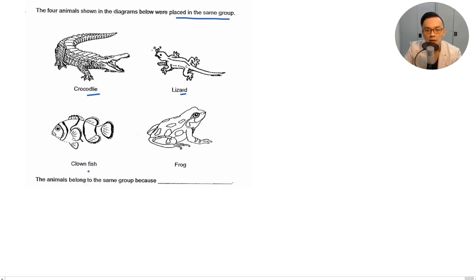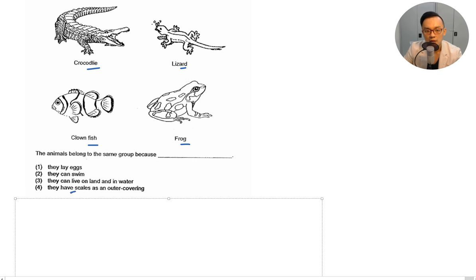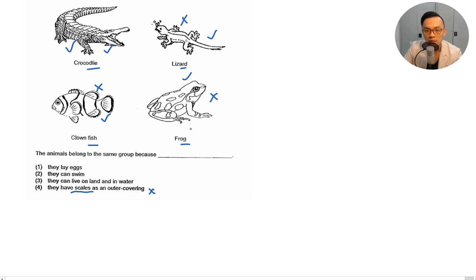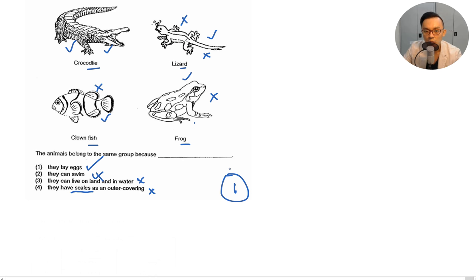Four animals — crocodile, lizard, clownfish, and frog — are placed in the same group. Do they all have scales? Frog has moist skin — no. Can they all live on land and water? Clownfish can only live in water, lizard only on land — no. Can they all swim? Lizard cannot swim — no. Do they all lay eggs? Yes, all of them lay eggs. So the answer is number one: they all lay eggs.